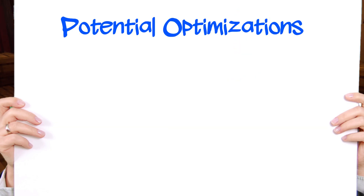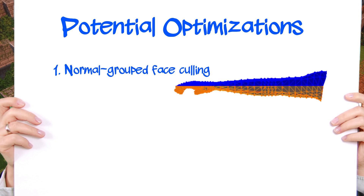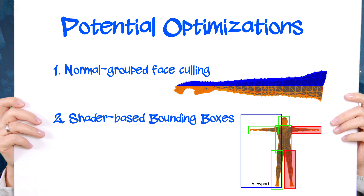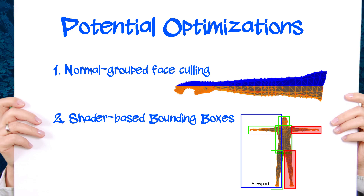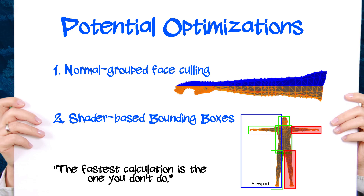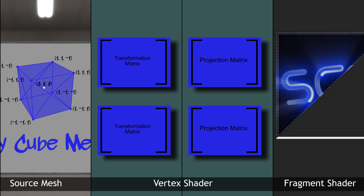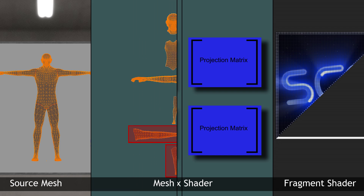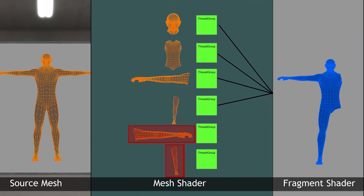Depending on how you define your meshlets, this allows several easy optimizations. For example, what if you grouped together multiple triangles facing in the same direction? It would then be trivial to cull a collection of back-facing faces in one fell swoop. And what if you detected that the bounds of an entire meshlet fell outside of the bounds of your view using a simple bounding box test? You can cull it in the shader as a chunk. You're no longer required to iterate a mesh's entire list of vertices and primitives. Your mesh shader simply must output transformed vertices and their related attributes just as you would with a vertex shader, but now you'll only output the ones that you really need.